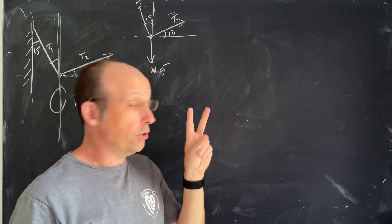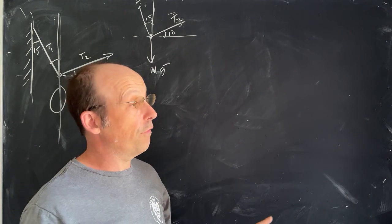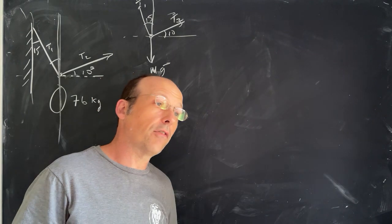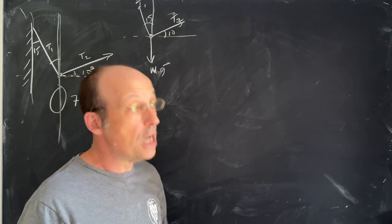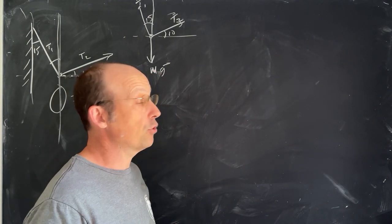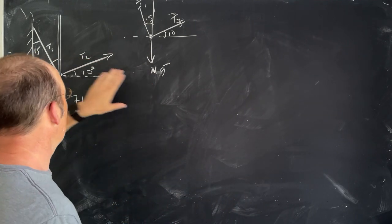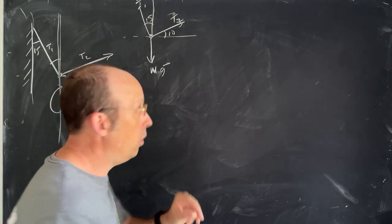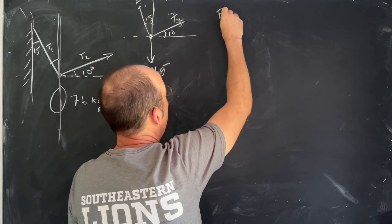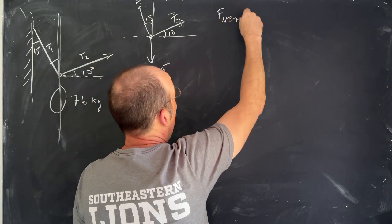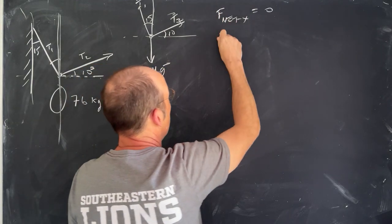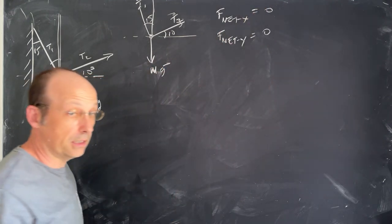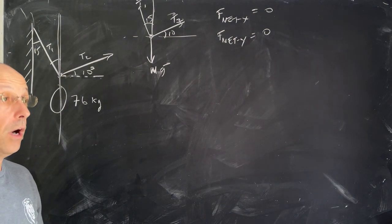Here is a case. Remember, there are two kinds of problems. Either we know all the forces, find the acceleration, or we know the acceleration, find the forces. In this case, we know the acceleration, it says motionless, at rest, and motionless. So the total acceleration is zero. So I'm going to write that as two equations: F net X equals zero, F net Y equals zero in both the X and the Y direction.